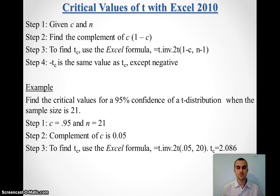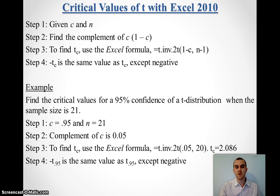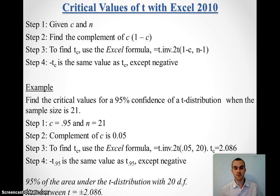So, plug it into the Excel formula, and that tells me my positive t-critical value is 2.086. And the negative would just be the negative version. So, what I know is 95% of the area under the t-distribution with 20 degrees of freedom is between positive and negative 2.086.